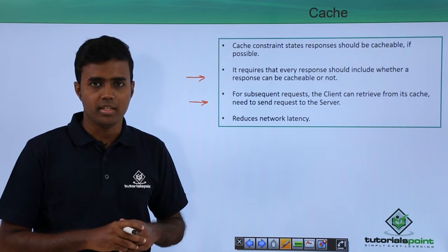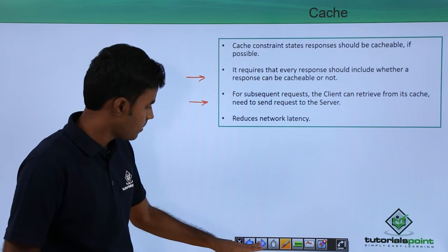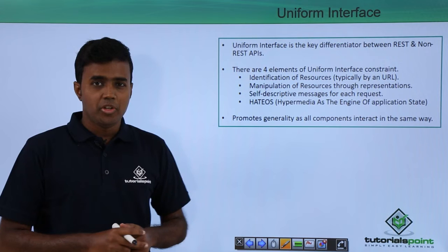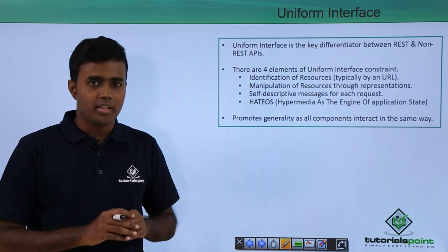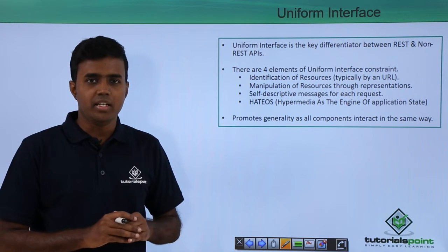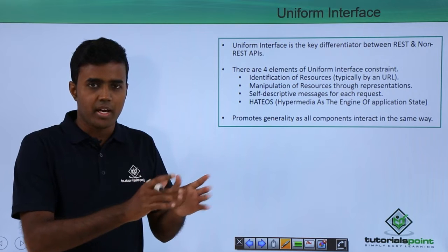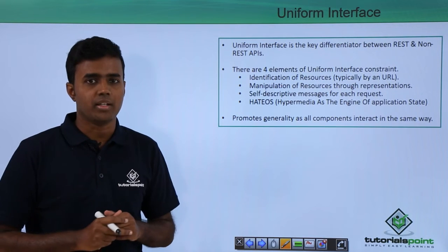The next constraint is the Uniform Interface Constraint, which is the key constraint that basically differentiates a REST API from a non-REST API.